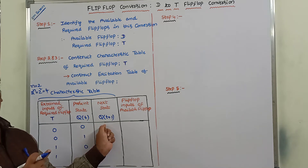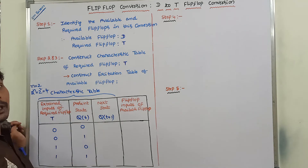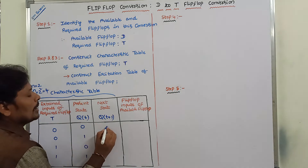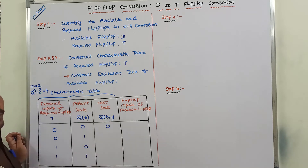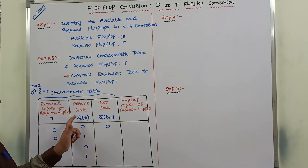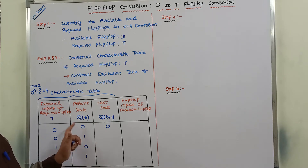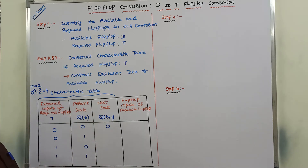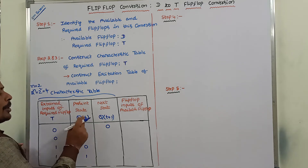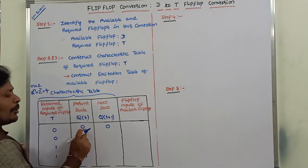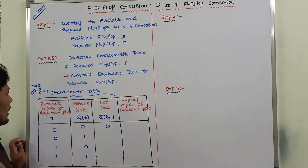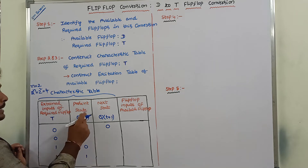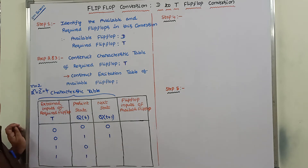To find out Q(t+1) for each possible input combination: if T value is 0 and Q(t) value is 0, then Q(t+1) is 0. That means if T value is 0, whatever the previous output or present state, that value can be obtained as the next state. So T=0, Q(t)=0 gives output 0. Next, T=0 and Q(t)=1 gives the same Q(t) value as the next state.